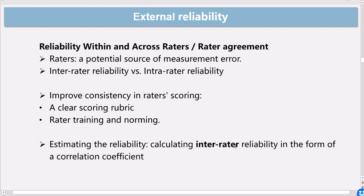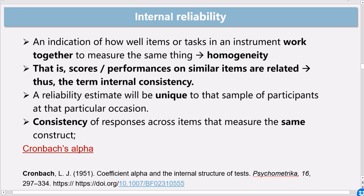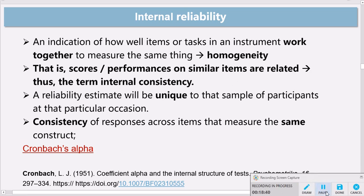So like I said, we can calculate the inter-rater reliability in the form of a correlation coefficient, and that brings me to the end of the first part of this video. In the second part I'm going to discuss internal consistency and Cronbach's alpha. Thank you very much for your attention. If you like the video, please give it a like and subscribe to the channel. Have a good day.